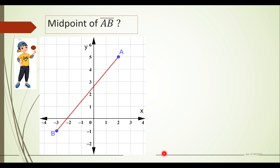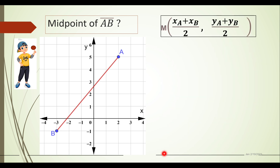Let us also find the midpoint of segment AB. We have point A in the first quadrant and point B in the third quadrant. The first thing we do is identify the set of coordinates. Point A, since it is in the first quadrant, has positive coordinates.